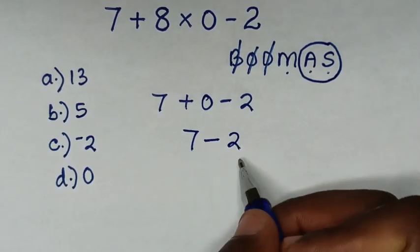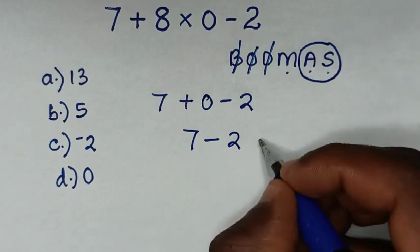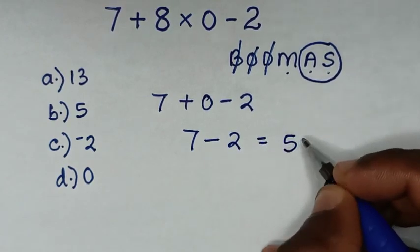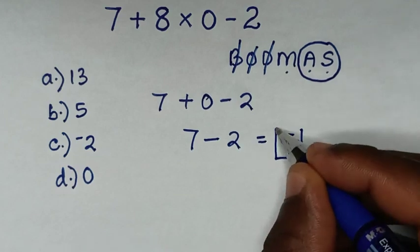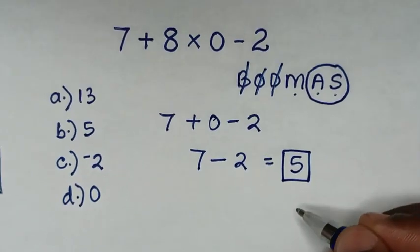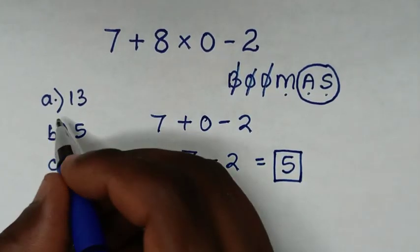Now we are left with subtraction of 7 minus 2, which is equal to 5. Therefore, this is our final answer. Selecting the multiple choice, it is B.